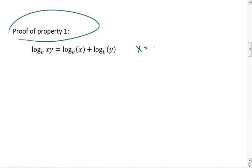I'm going to let x equal b to the m and y equal b to the n. We know that x times y equals b to the m times b to the n, which equals b to the m plus n.